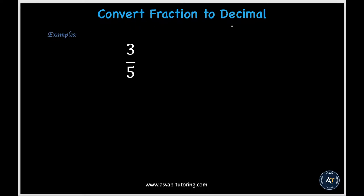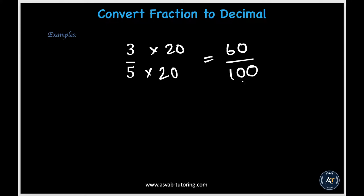Let's learn how to convert fractions to decimals. In this example we have three fifths, and the easiest way to turn a fraction into a decimal is by trying to turn the denominator into 100. This becomes very easy because 100 is divisible by 5, because 5 times 20 gives us 100.